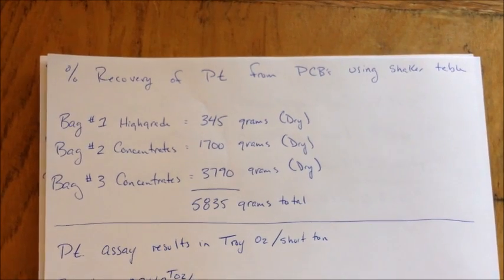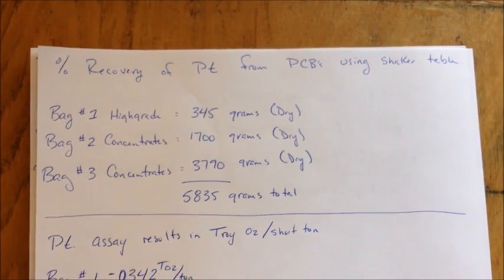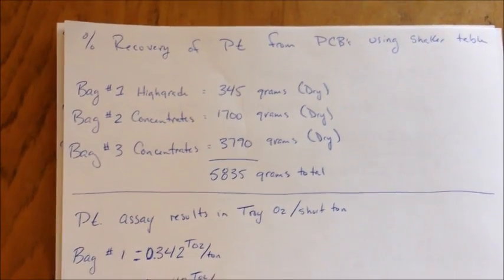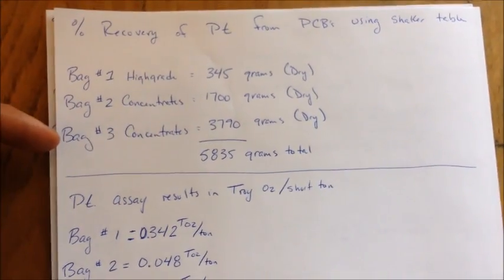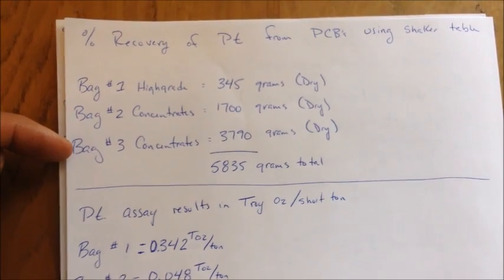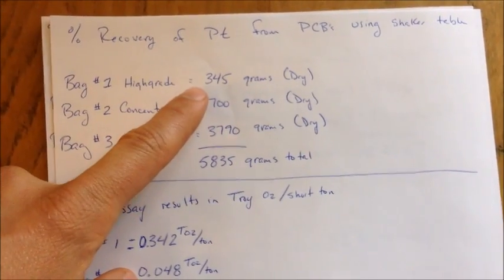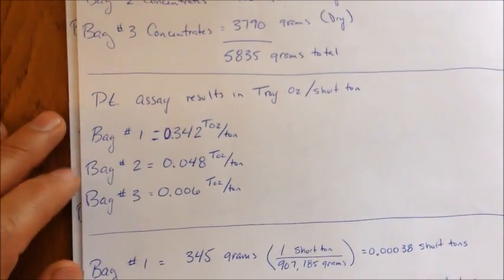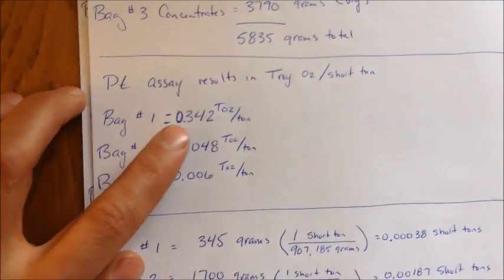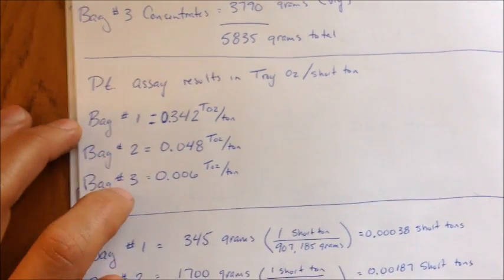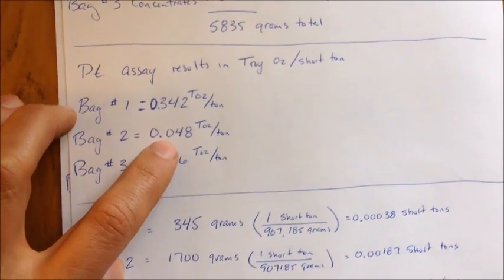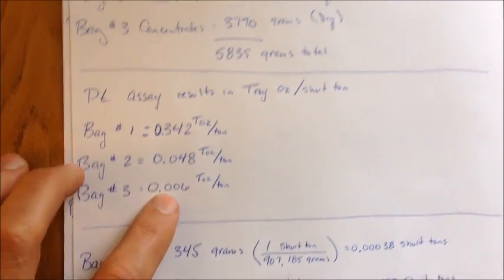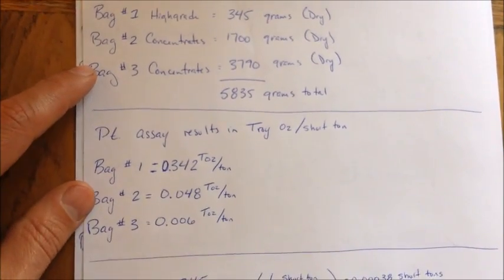So here's a sample calculation. We're going to find out the percent recovery of platinum from our PCB test using our shaker table. And these are the three bags that we sent in to the assay office. These are their dry weights in grams. And these are the results of the assay. Bag 1 had 0.342 troy ounces per ton, bag 2 0.048 troy ounces per ton, bag 3 0.006 troy ounces per ton. And both of these were given to me by the assay report.